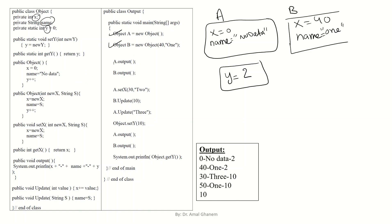Now we call a.output(). We go to the output method, which prints x, dash, name, dash, and y for object a. So we output the values 0, "no data", and 2. That is why the first line of output is: 0 - no data - 2.